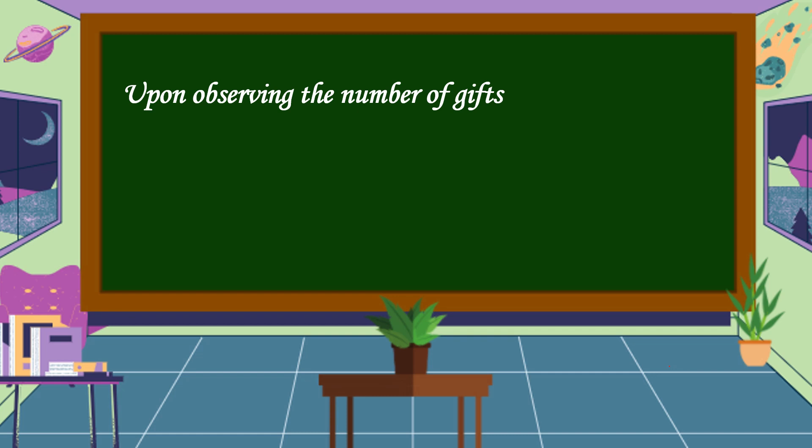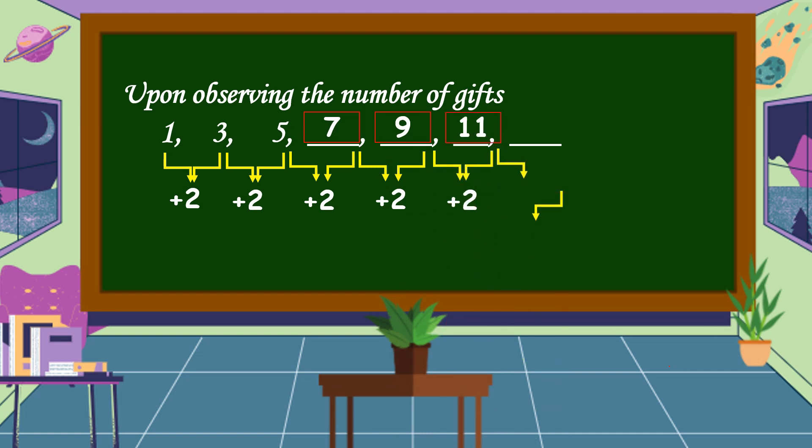Upon observing the number of gifts 1, 3, 5, and so on, the pattern is we're going to add 2 from the preceding number. So 1 plus 2 equals 3, 3 plus 2 equals 5, 5 plus 2 equals 7, 7 plus 2 equals 9, 9 plus 2 equals 11, 11 plus 2 equals 13. The pattern rule is add 2.